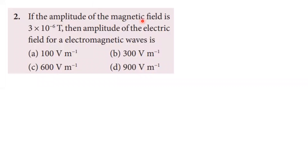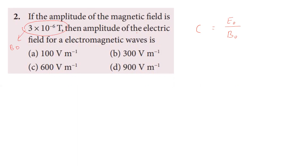Second question: if the amplitude of the magnetic field is 3×10⁻⁶ T, find the amplitude of the electric field for the electromagnetic wave. An electromagnetic wave moves with the speed of light in vacuum, and the speed of light equals electric field intensity divided by magnetic field induction. Rearranging the equation, E₀ = c × B₀.